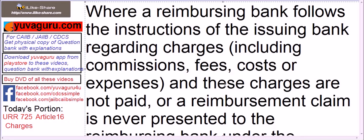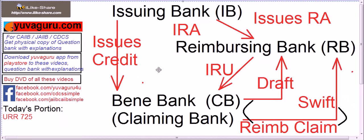When a reimbursing bank follows the instructions of the issuing bank regarding charges — including fees, commissions, costs, and expenses — but these charges are not paid, those charges are also to the account of the issuing bank. If any charges of the reimbursing bank are not paid, they remain the issuing bank's responsibility, provided the reimbursing bank has acted as per the RA. If it made its own mistake, then it bears the problem itself.